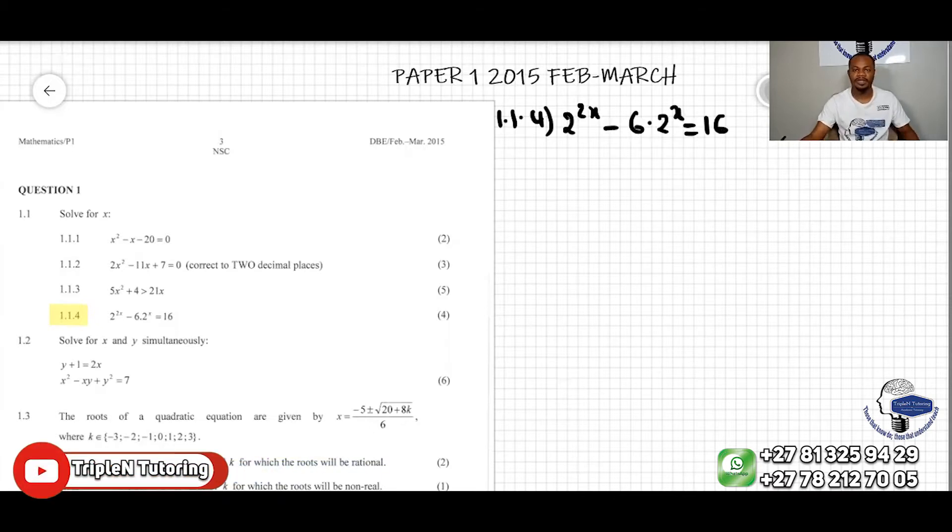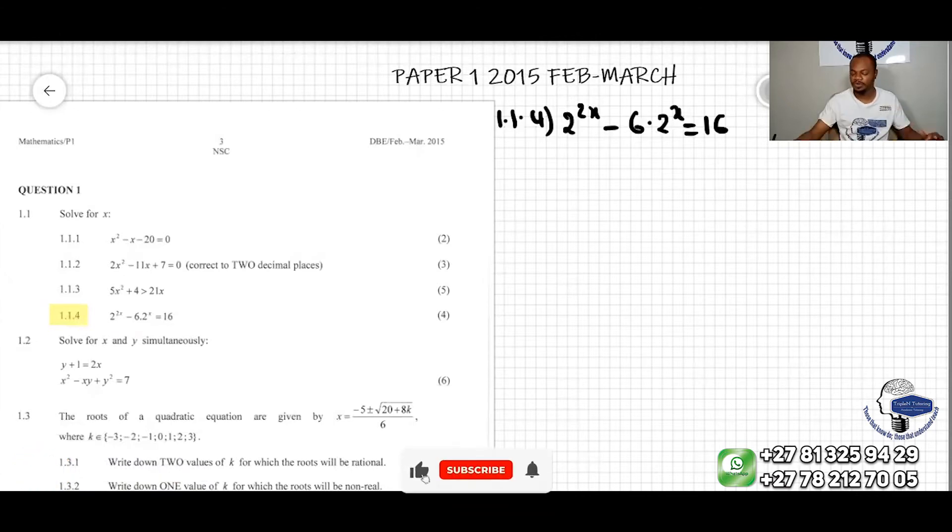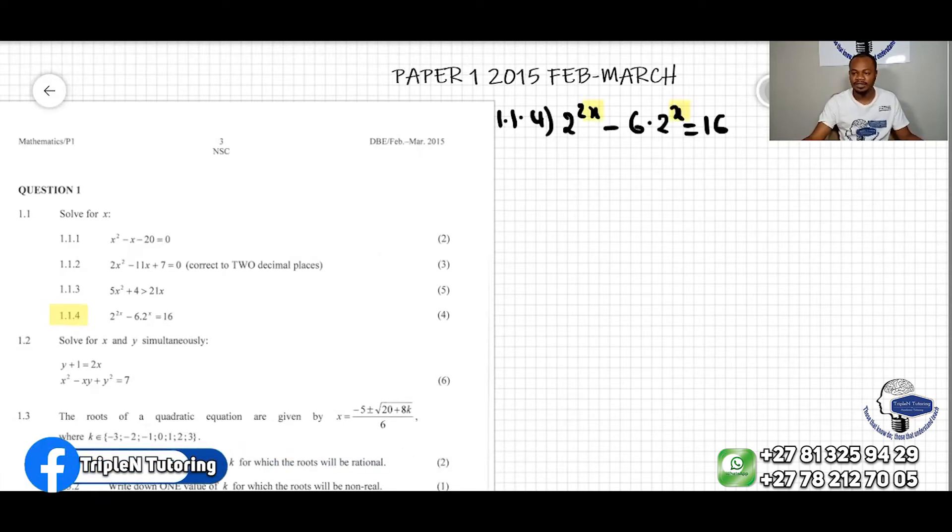In order to solve this problem, we can transform it because we can notice that the unknown is part of the exponents. So we have an exponential equation here. So what can we do?